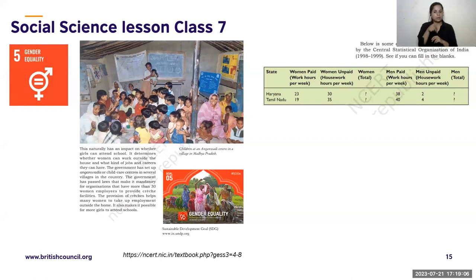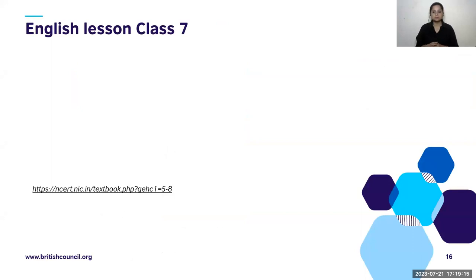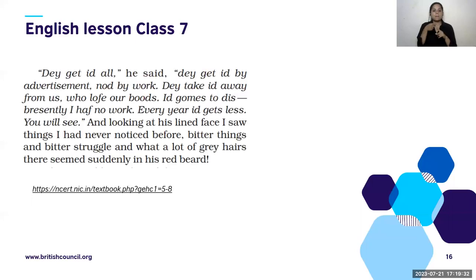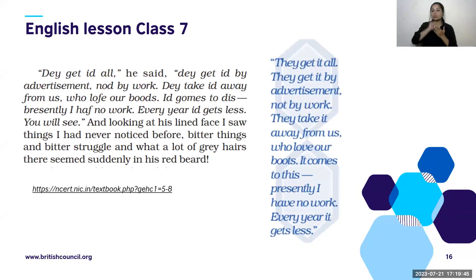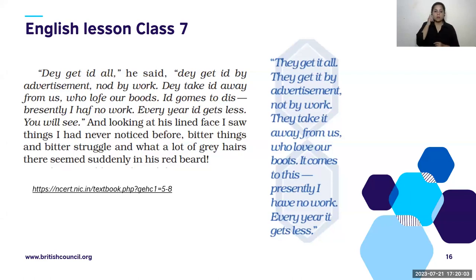Now let's move to an English lesson from Class 7. Lessons from Social Science and Environmental Studies are relatively easy to link to the SDGs, but what if you're an English teacher with an English lesson? It's still possible. This lesson is about a shoemaker — an excellent craftsman who makes quality shoes but loses all his business and eventually dies of starvation. He says: 'They get it all — they get it by advertisement, not by work. They take it away from us... every year it gets less.' And prophetically, he does lose all his work.